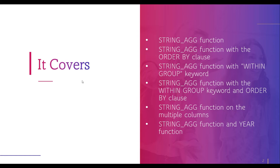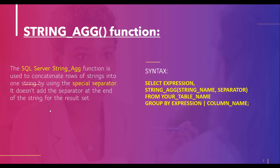The STRING_AGG function is used to concatenate rows of strings into one string by using a special separator. It doesn't add the separator at the end of the string in the result set. Inside the STRING_AGG function there are two parameters: first is the string name or column name, and second is the separator. You can use different separators like comma, semicolon, backslash, and others.